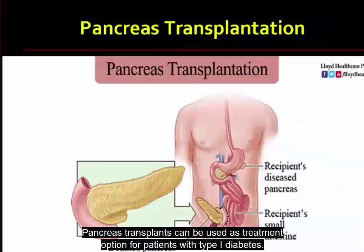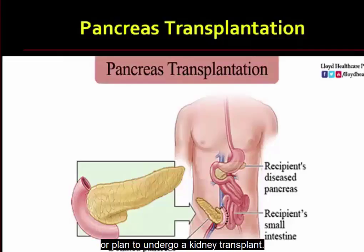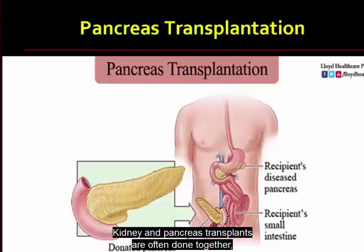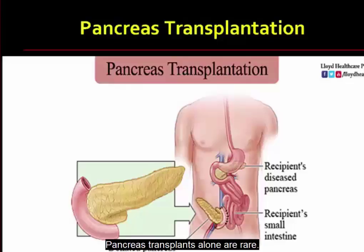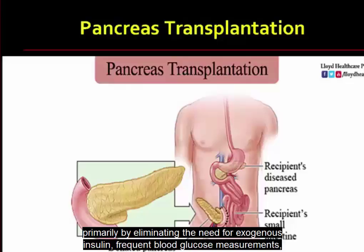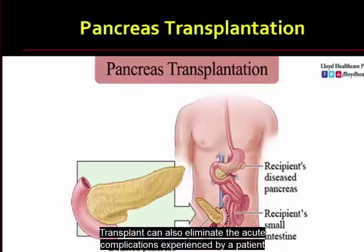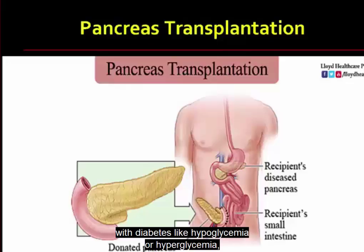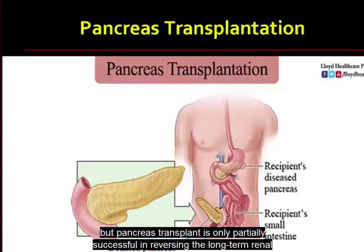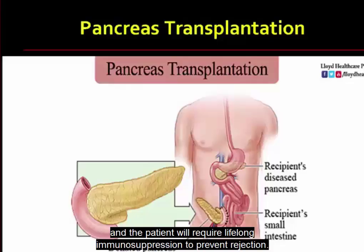Pancreas transplants can be used as a treatment option for patients with type 1 diabetes, usually for those who have end-stage kidney disease or have had or plan to undergo a kidney transplant. Kidney and pancreas transplants are often done together, or a pancreas may be transplanted after a kidney transplant. Successful pancreas transplants can improve quality of life by eliminating the need for exogenous insulin, frequent blood glucose measurements, and dietary restrictions. Transplants can also eliminate acute complications, but are only partially successful in reversing long-term renal and neurological complications, and the patient will require lifelong immunosuppression to prevent rejection.